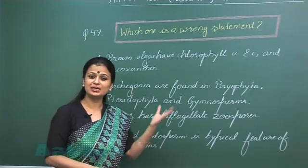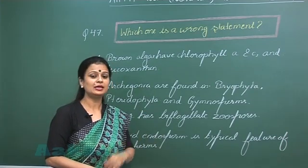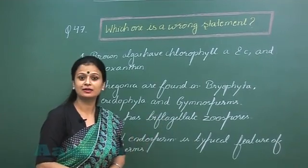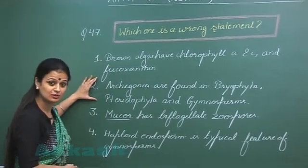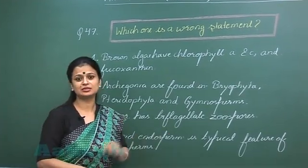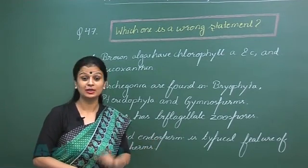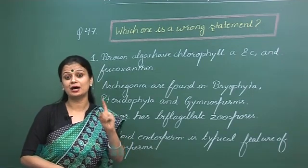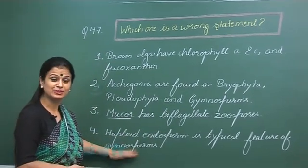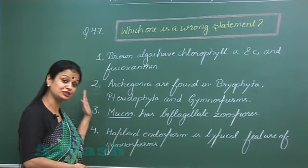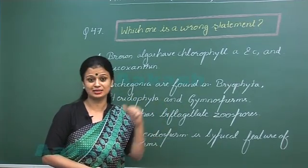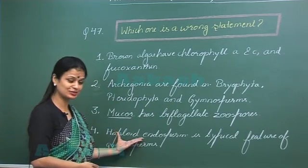Archegonia represent the female sex organ in bryophytes, pteridophytes and gymnosperms. In the case of angiosperms, archegonia are absent. So the second statement is also correct. Now the fourth statement — haploid endosperm is present in gymnosperms. In gymnosperms, the endosperm is formed without fertilization, without triple fusion; it is a pre-fertilization tissue. The function of the endosperm is performed by the female gametophyte, so it is haploid in nature. This statement is also correct.